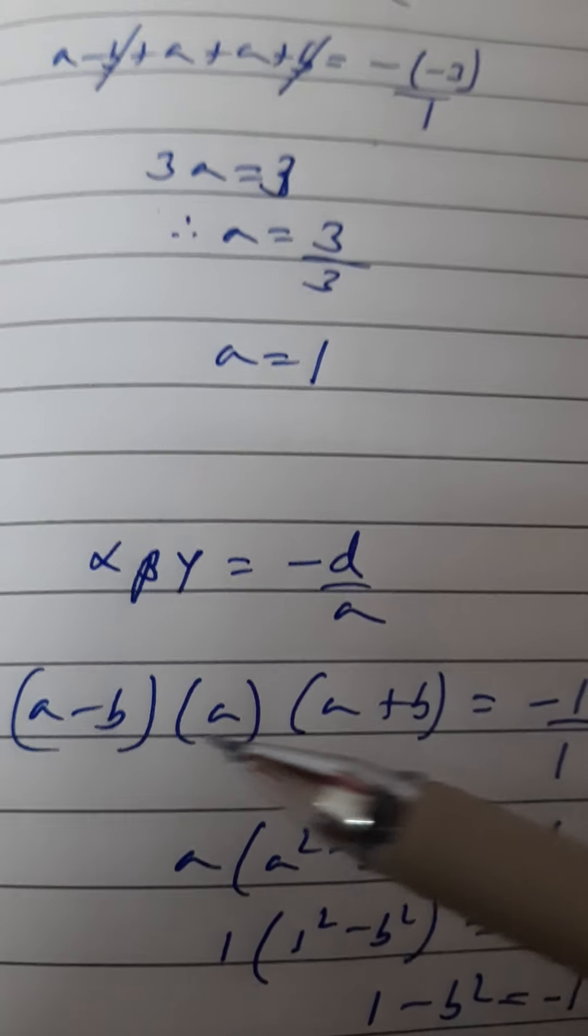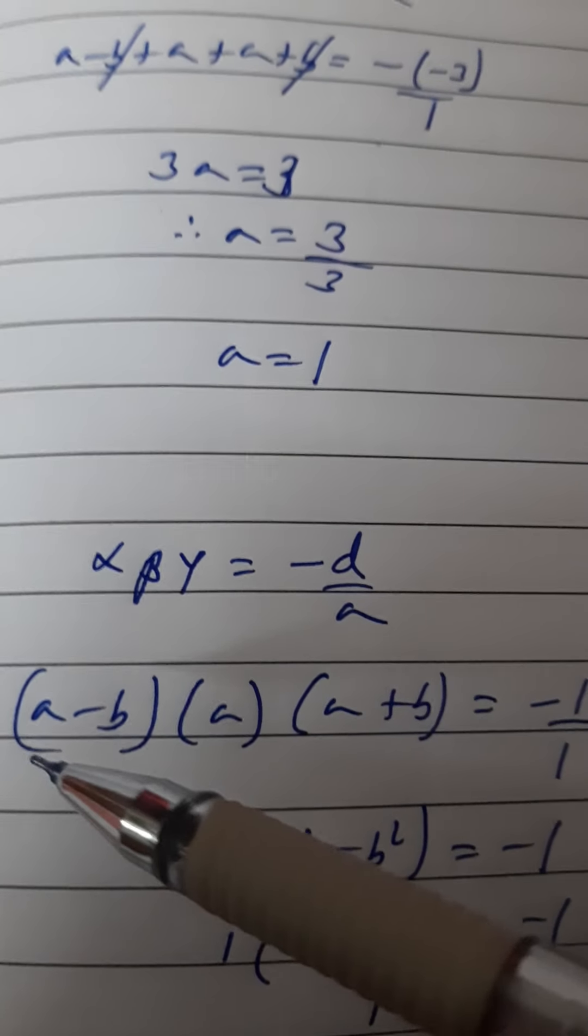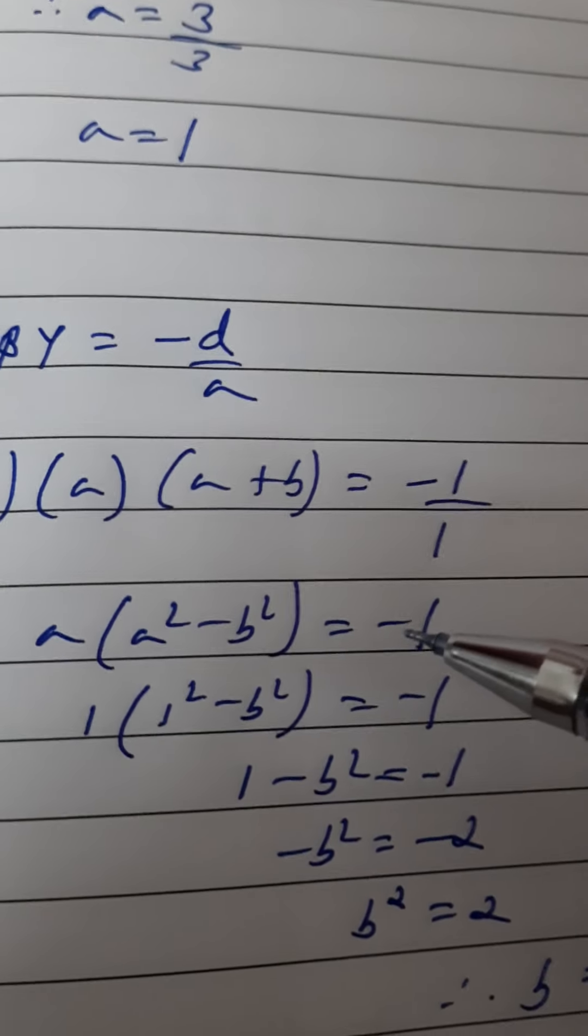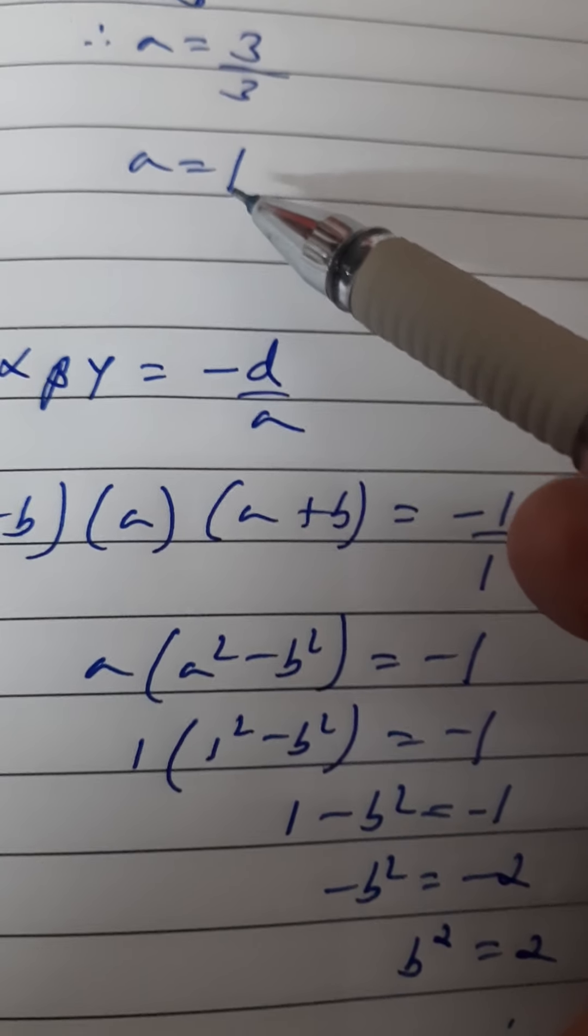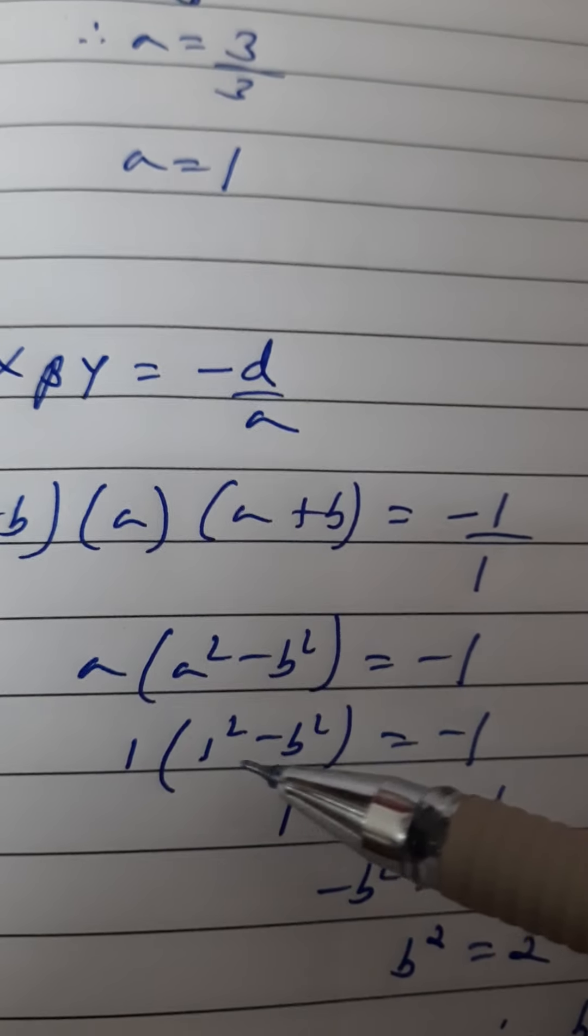So here, if you look at the first and the last bracket, there's an identity: (a+b)(a-b), that's a² - b². a remains as it is, and -1 upon 1 is -1. Instead of a, we can put 1 because we have already found out the value of a, so here we are putting 1² - b².